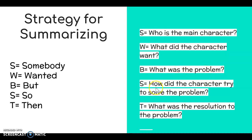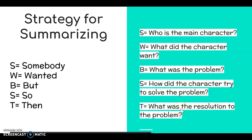S is for So — we have to think, how did that character try to solve the problem? Then, to finish off the summary, you think: what was the resolution of the problem? Not only how did they try to solve it, but what happened after they tried to solve it? What occurred? What was the resolution?